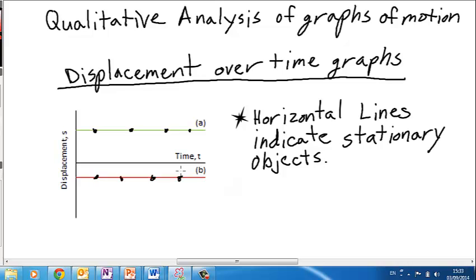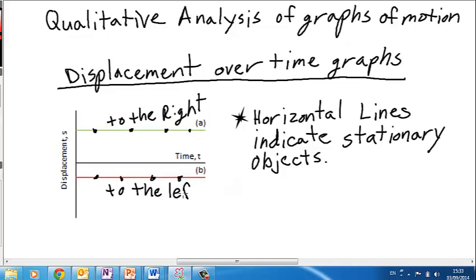I can see that object A is to the right of me, because its displacement is in the positive direction. I can tell that object B is to the left because it's below the x-axis and therefore has negative displacement. I can also see that object B is closer than object A because the distance is not as far.